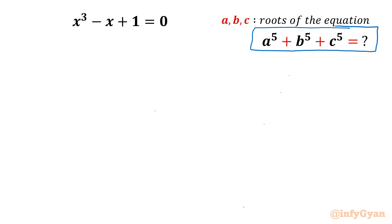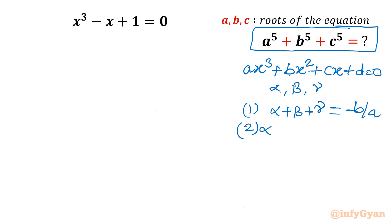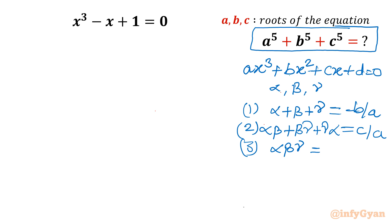I will begin with Vieta's method. For a general cubic polynomial ax³ + bx² + cx + d = 0 with roots α, β, γ, we can generate three equations. Sum of roots: α + β + γ = -b/a. Sum of roots taken two at a time: αβ + βγ + γα = c/a. Product of three roots: αβγ = -d/a.